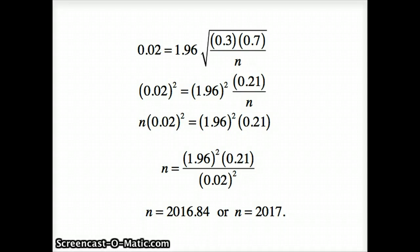Doing the computation, we get 2016.84. Now remember, we're determining the number in the sample. You cannot have a fraction in the sample, so we round up. Rather than saying 2016.84, we say that we have 2017 in our sample size, and our guess is if we have 2017 in our sample size, our margin of error should be very close to 0.02.